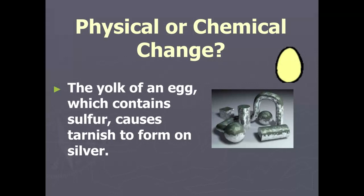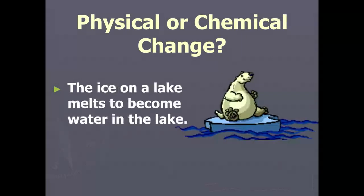Physical or chemical? The yolk of an egg, which contains sulfur, causes tarnish to form on silver — that is chemical, because tarnish is a different substance from the silver. Physical or chemical change: the ice on a lake melts to become water. Is it still water when it's ice and when it's liquid? Yes — therefore it is a physical change.